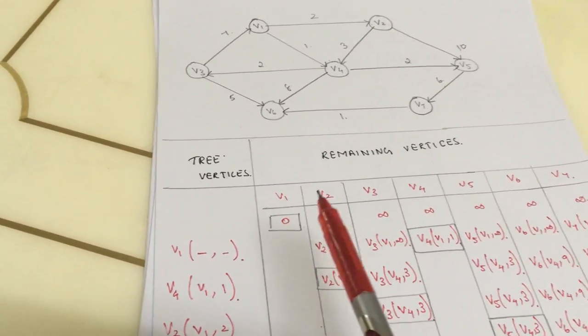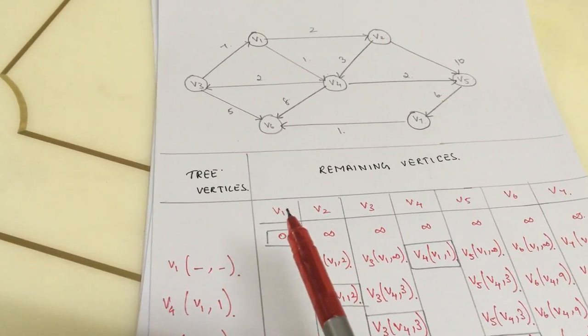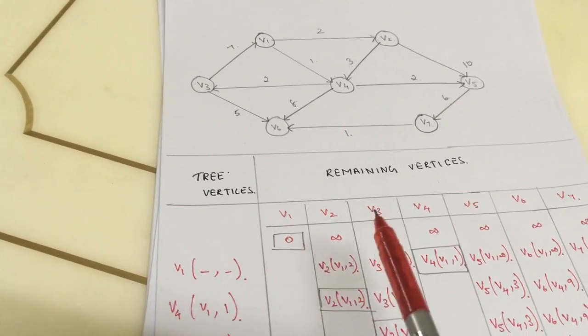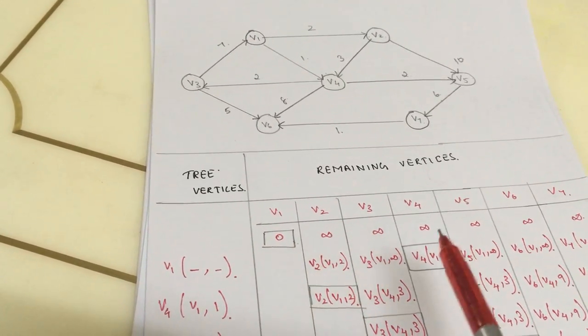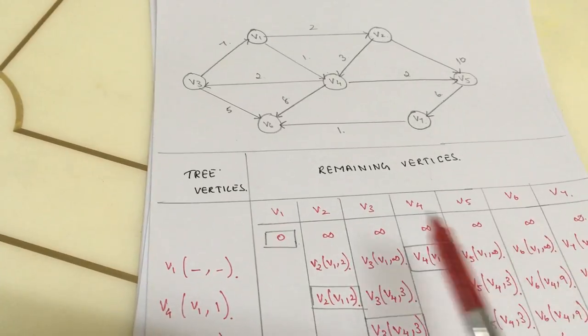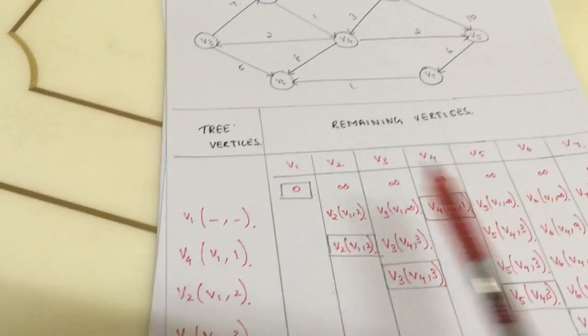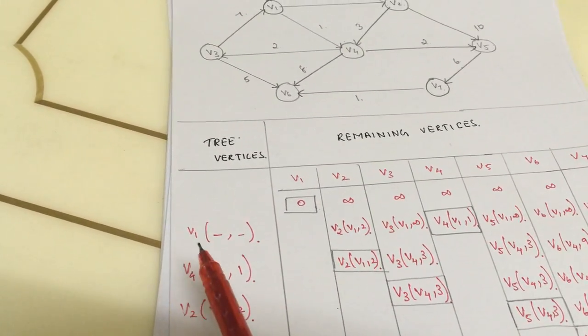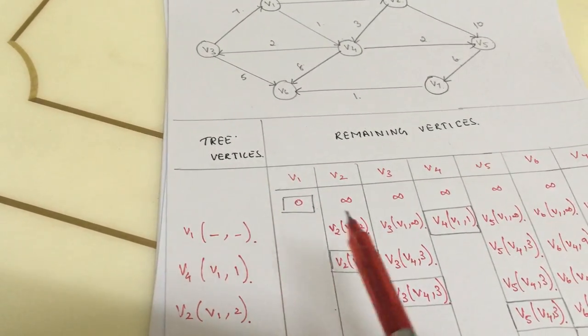The first entry will be for the source with index 0, and the other vertices will be infinity. It is written as v1, dash, comma, dash.